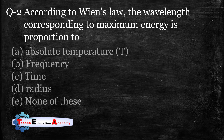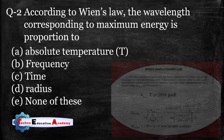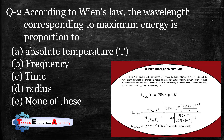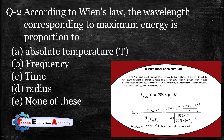Question number two: according to Wien's displacement law, the wavelength corresponding to maximum energy is proportional to which option? Option A: absolute temperature, option B: frequency, option C: time, option D: radius, option E: none of these. According to Wien's displacement law, lambda maximum times T equals 2898 micrometers times Kelvin. So the right answer is option A: absolute temperature.